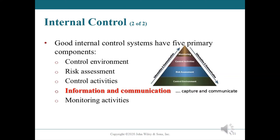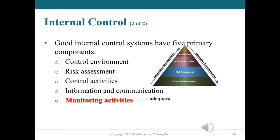Four: information and communication. The internal control system must capture and communicate all pertinent information to the appropriate internal and external users. Five: monitoring activities. Internal control systems must be monitored periodically for their adequacy.